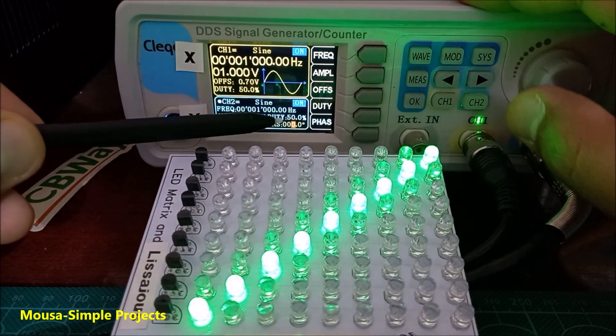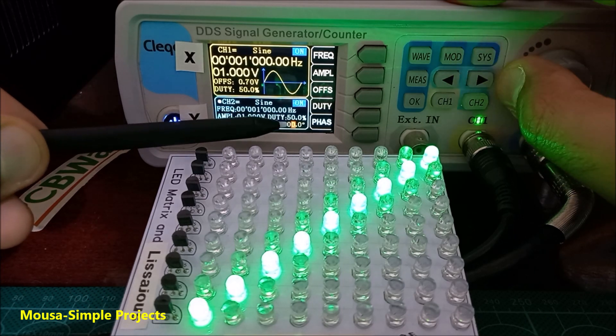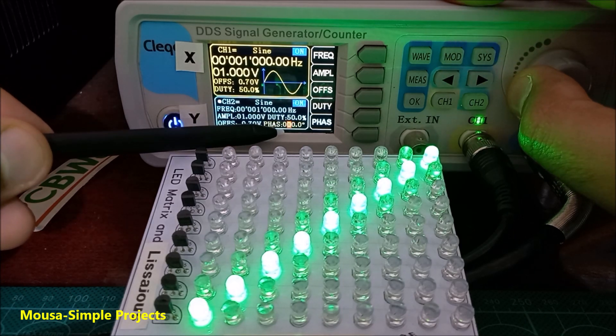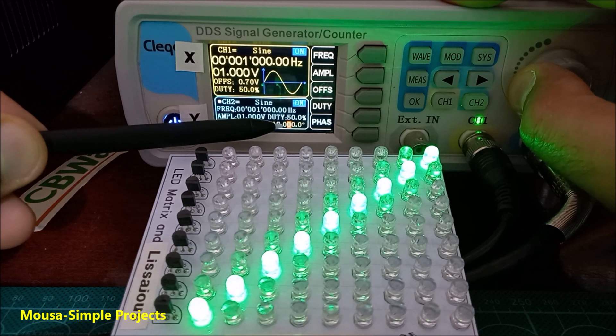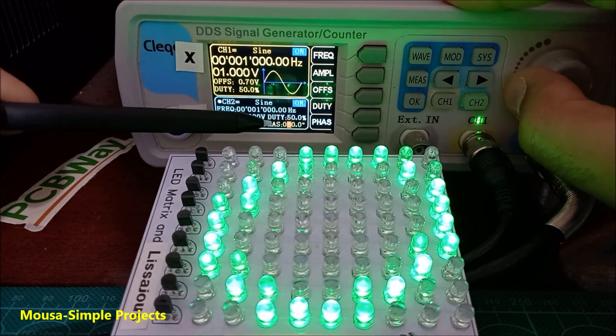Lissajous figures can also show you the phase angle between the two signals. When they are in phase, we got a straight line. At 90 degrees, we got a circle.